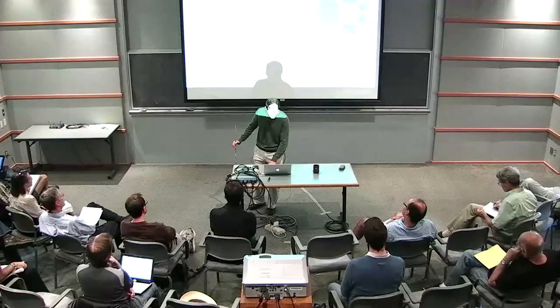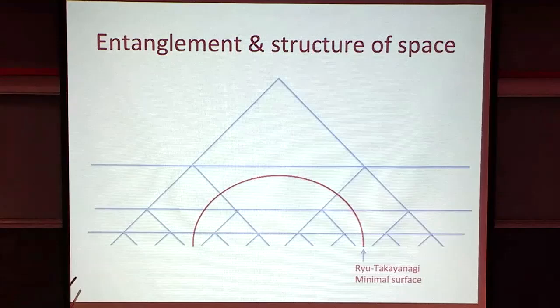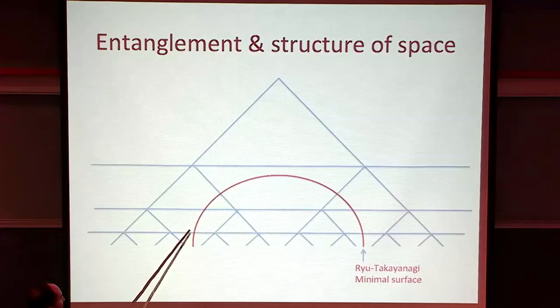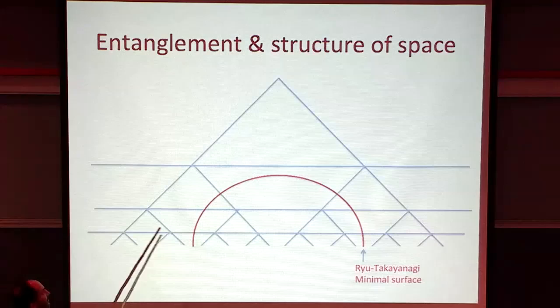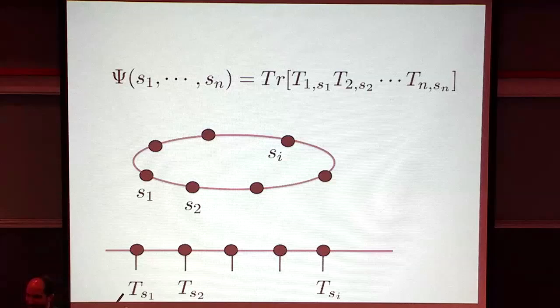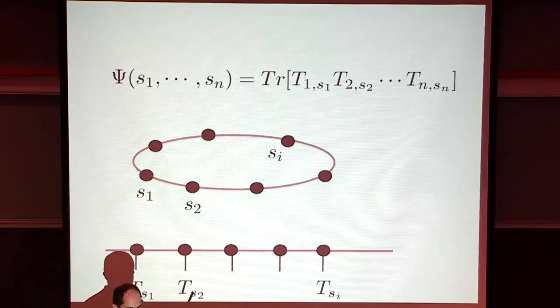To compute the entanglement between a region on the boundary and the rest: if we cut some number of links, the entanglement entropy cannot be bigger than log D, because there are D states there. The actual entanglement could be smaller but not bigger. So if we cut one of these links, the entanglement is bounded by log D. If these tensors are very generic, it would be of order D.